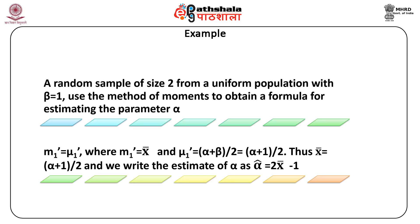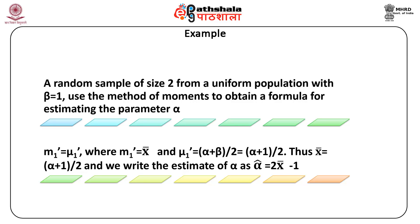Example 2: Given a random sample of size 2 from a uniform population with beta = 1, use the method of moments to obtain a formula for estimating the parameter alpha. We solve the equation m'1 = mu'1, where m'1 = x-bar and mu'1 = (alpha + beta)/2 = (alpha + 1)/2. Thus x-bar = (alpha + 1)/2, and we write the estimate of alpha as alpha-hat = 2*x-bar - 1.